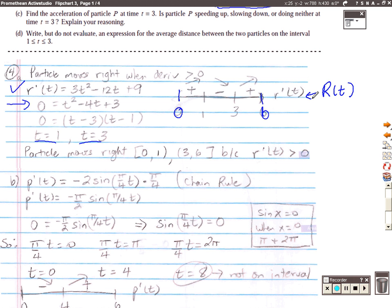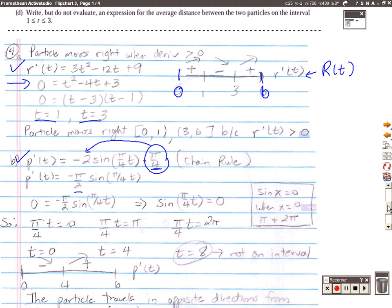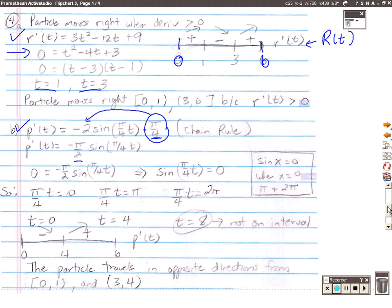I'm going to find the first derivative for the P function and I have to use the chain rule, and that's why the pi over 4 appears. The derivative of the angle is pi over 4. When I multiply pi over 4 by negative 2, that's where the negative pi over 2 comes from. I'm going to set that function equal to zero.